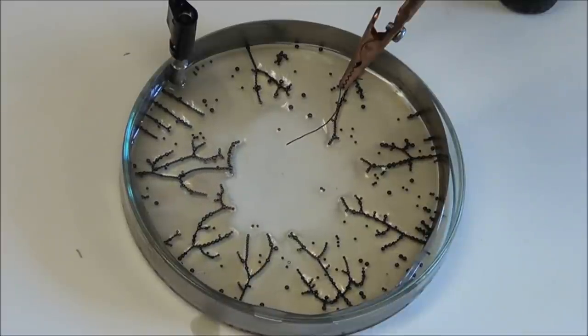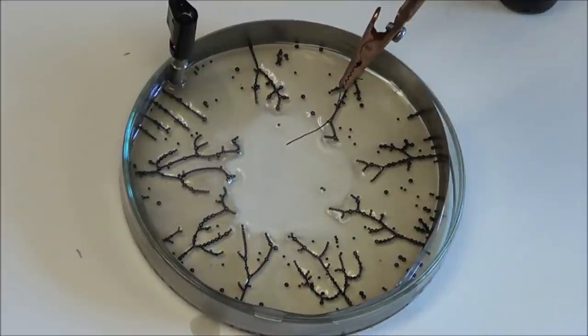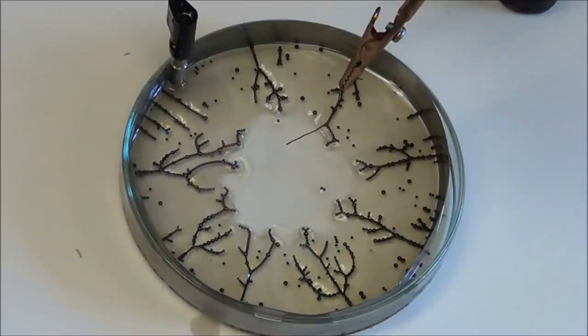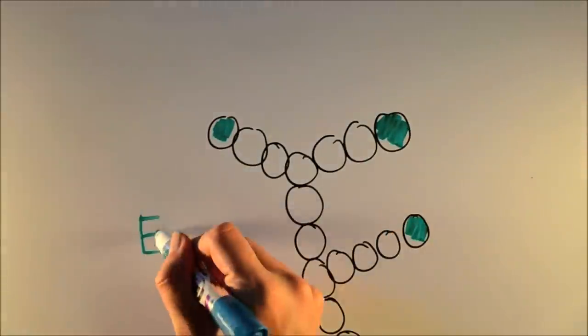It turns out that self-assembling wires have some really cool properties. Some metrics are very predictable and others are not. For example, whenever you do this experiment, you find that the balls that end the chains make up 22% of the population.